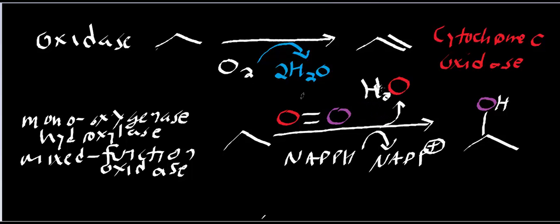So what did we just see? Well, it turns out that mixed function oxidases, or monooxygenases, or hydroxylases, use molecular oxygen in order to add a hydroxyl group. And usually they're adding it to a carbon chain.